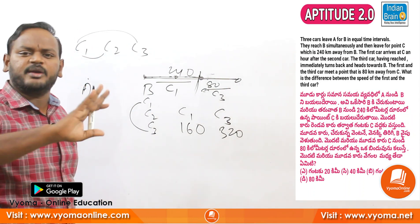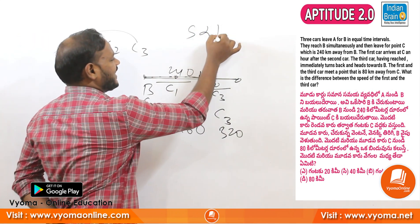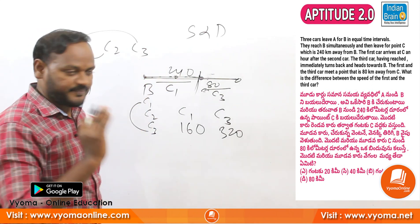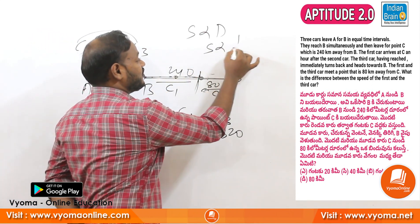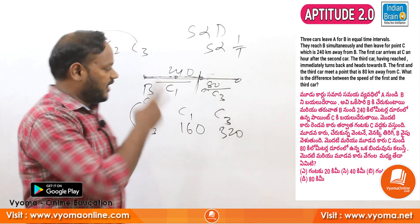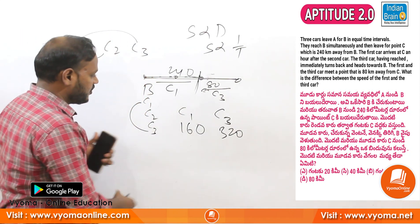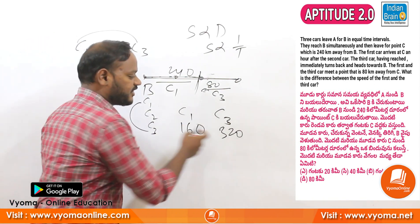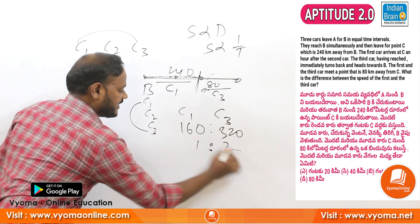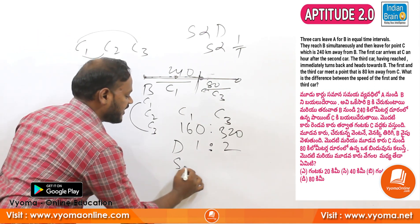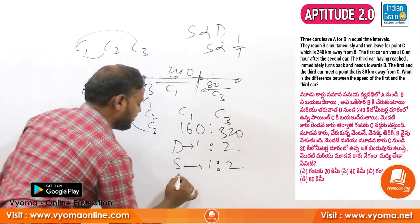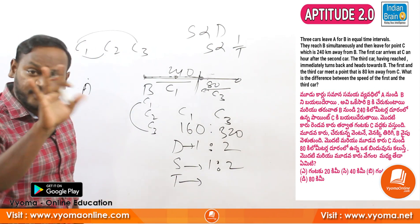Now we have three conditions. Speed and distance are directly proportional — that is the first universal fact — when time is the same. Speed and time are inversely proportional when distance is the same. That is the second universal fact. The distance ratio is 1:2, which means the time ratio is 2:1 — inverse.